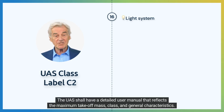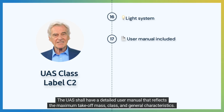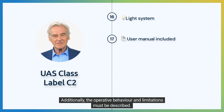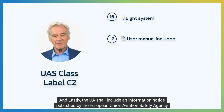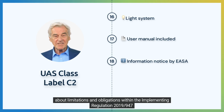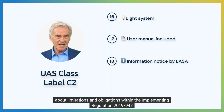The UAS shall have a detailed user manual that reflects the maximum takeoff mass, class, and general characteristics. Additionally, the operative behavior and limitations must be described. And lastly, the UA shall include an information notice published by the European Union Aviation Safety Agency about limitations and obligations within the implementing regulation 2019-947.